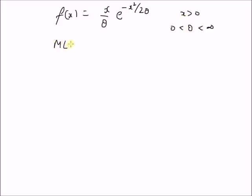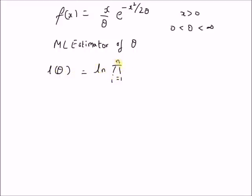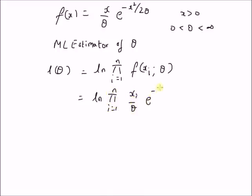So our goal is to find the maximum likelihood estimator of theta. We will define the log likelihood function of the parameter, which is defined as the logarithm of the product from i equal to 1 to n of f of xi with parameter theta, which equals the logarithm of the product from i equal to 1 to n of xi over theta multiplied by e to the power minus xi squared by 2 theta.